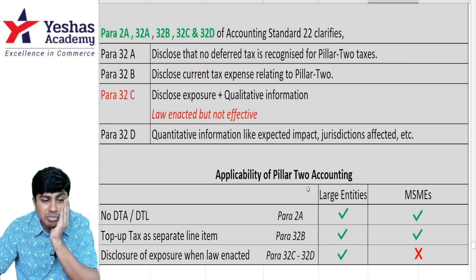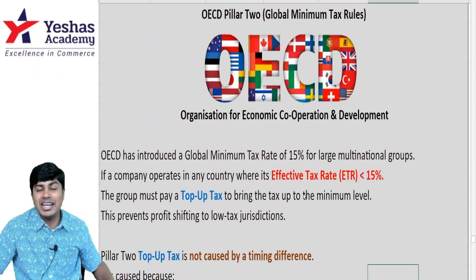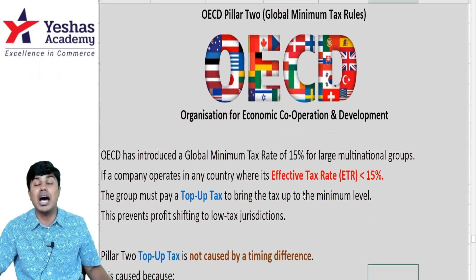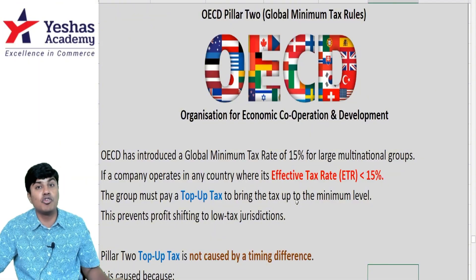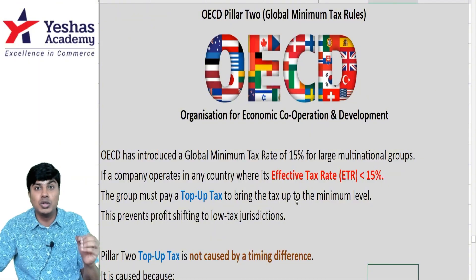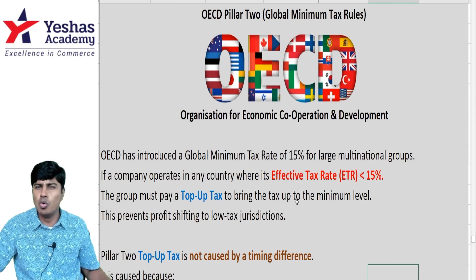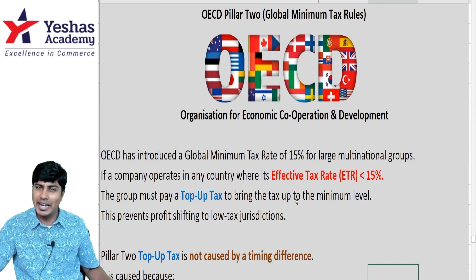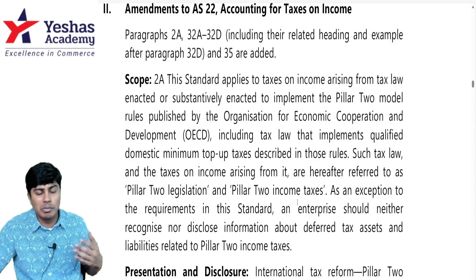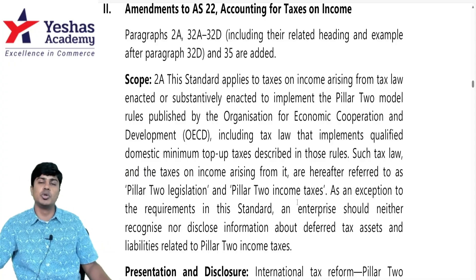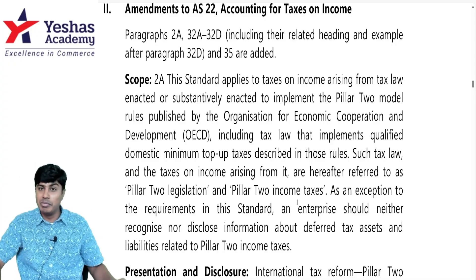I am not telling you something which is in Greek, Arabic or Latin. This is something which is there in your Accounting Standard 22 by way of a recent amendment applicable for January 2026 attempt of CA Intermediate and onwards. This is not told by me — this is told by the RTP which is issued by ICAI for the January 2026 attempt, and this amendment has been given.